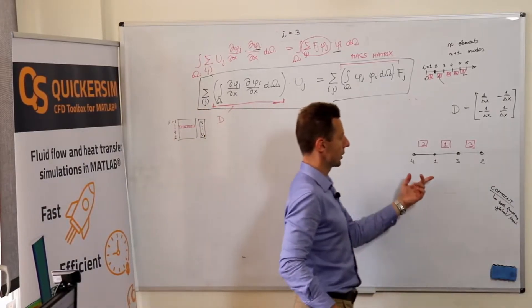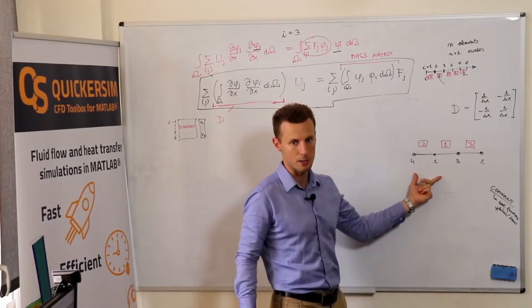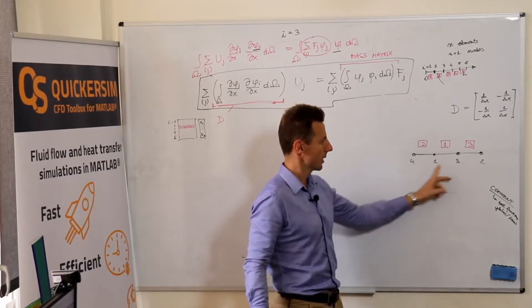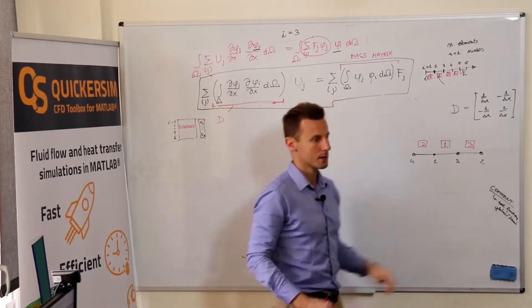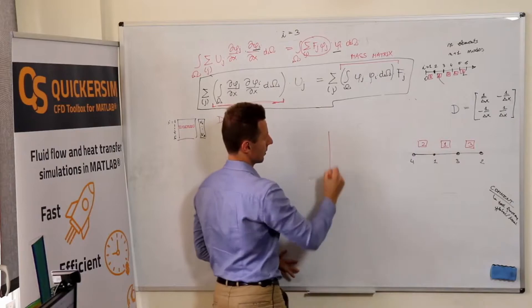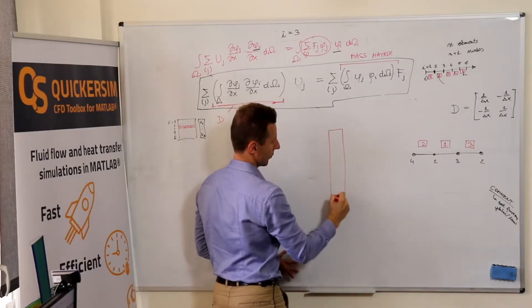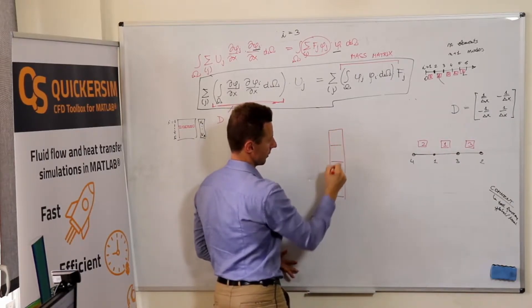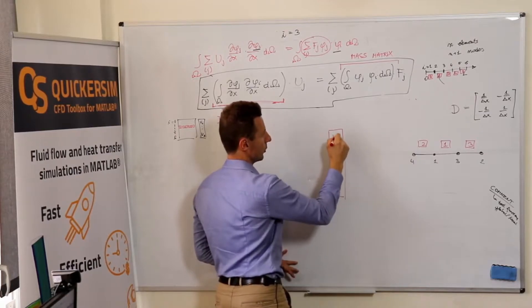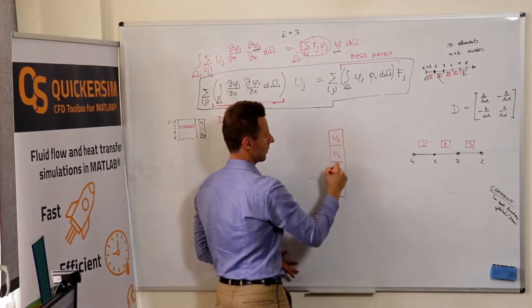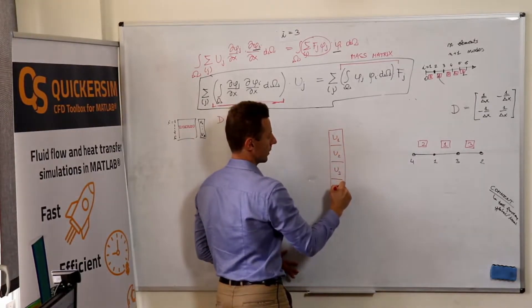So first let's determine the size of the matrix and size of the vector of unknowns. Clearly four nodes, so four unknowns in the system: U1, U2, U3, U4.